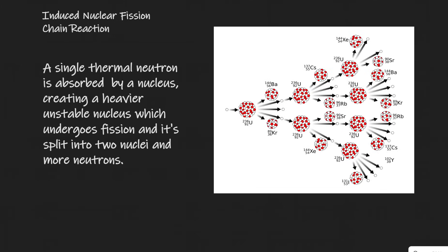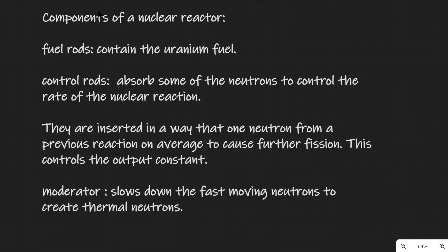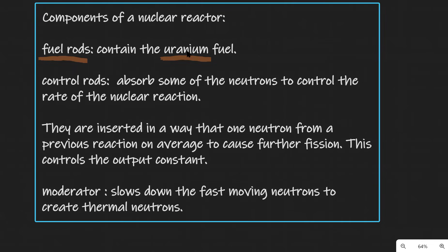Let's talk about induced nuclear fission chain reaction. A single thermal neutron, often moving slowly, is absorbed by a nucleus, creating a heavier unstable nucleus which undergoes fission and splits into two nuclei, releasing more neutrons. The process repeats itself — each neutron is absorbed by a uranium nucleus which then splits, and so on, creating a chain reaction. Now let's revise the components of a nuclear reactor.